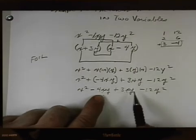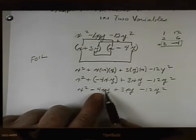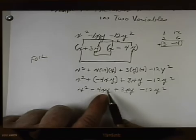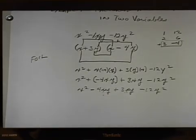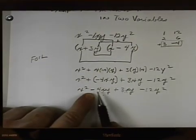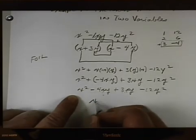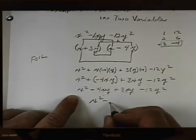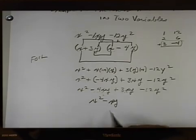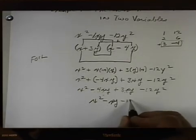They both have X's. They both have Y's. The X is raised to the first power in both of them. The Y is raised to the first power in both of them. So they're like terms. So we can subtract this from this. If we subtract 4 from 6, we get a negative 1. So we get minus 1XY. We don't usually write the 1. Minus 12Y squared.